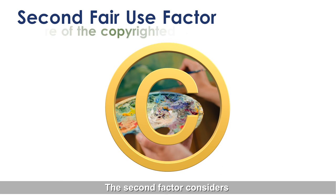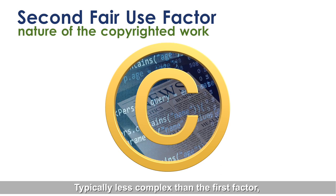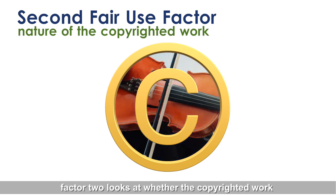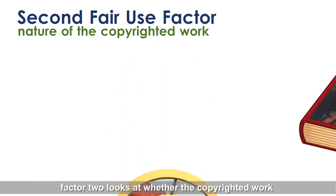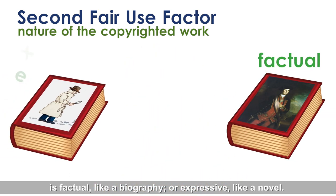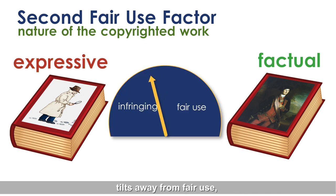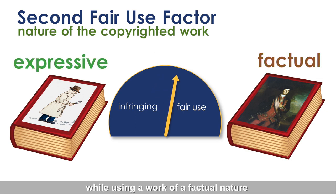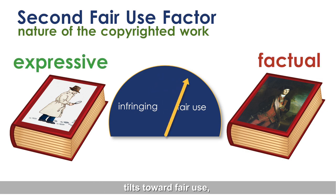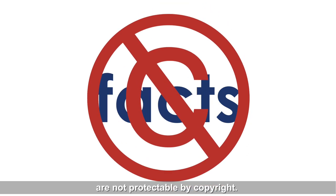The second factor considers the nature of the copyrighted work. Typically less complex than the first factor, factor two looks at whether the copyrighted work is factual, like a biography, or expressive, like a novel. Using a work of original expression tilts away from fair use, while using a work of a factual nature tilts toward fair use, because facts themselves are not protectable by copyright.